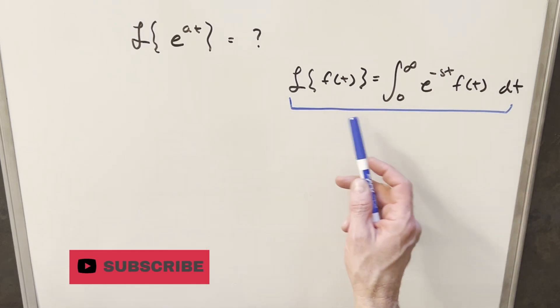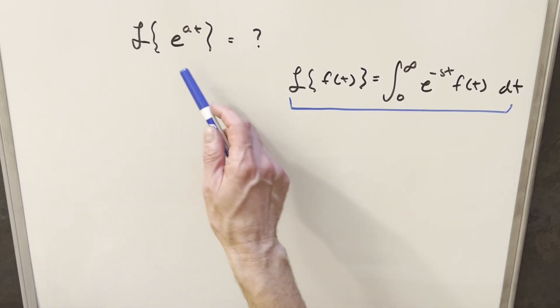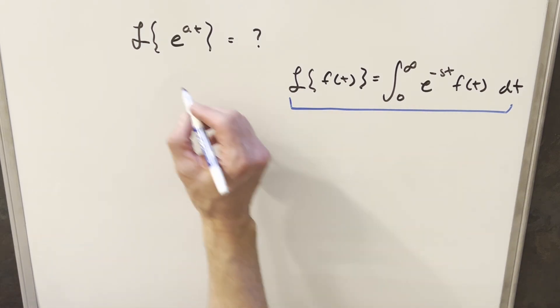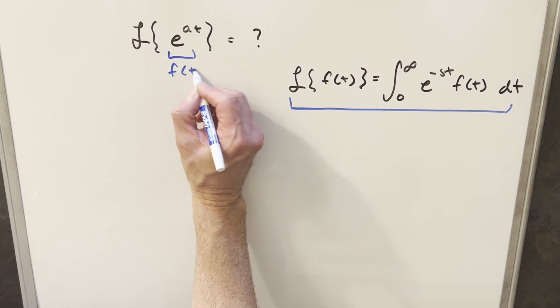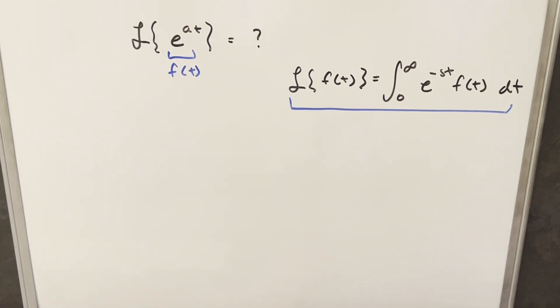And the thing to notice here is the Laplace transform is just an integral. So we have here, in this formula, this will be our f of t. So really, we just have an integral to calculate in order to find an expression for this Laplace transform.